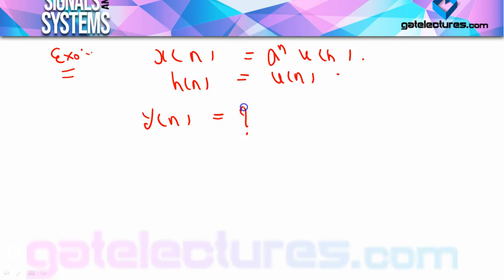हमें Y(n) calculate करना है, हमें X(n) और H(n) दोनों की value given है। Last video में X(n) और H(n) की values finite constant values थीं — जैसे 1, 2, 3, 4, 5 ऐसे values given थीं। लेकिन यहाँ पर X(n) और H(n) के equation given हैं, तो N की infinite number of values के लिए samples बन सकते हैं। इस तरह के equation form में given questions को किस तरीके से solve करें, इसके लिए मैं एक method बताने जा रहा हूँ।